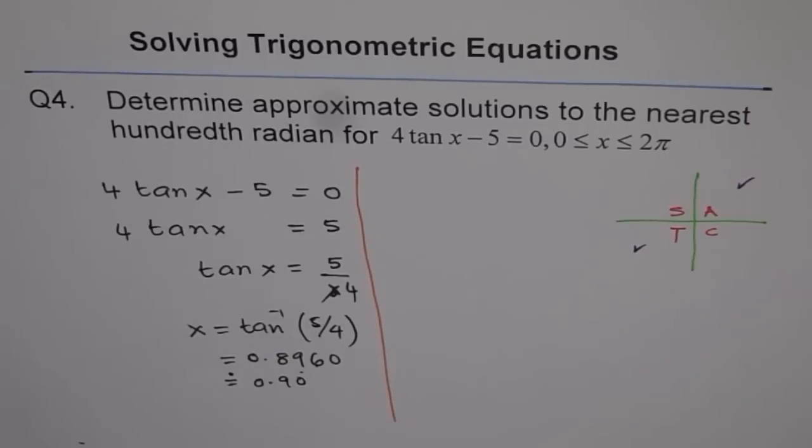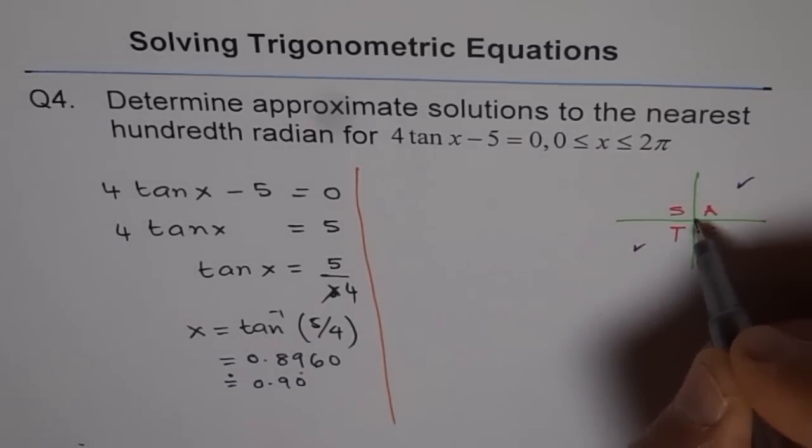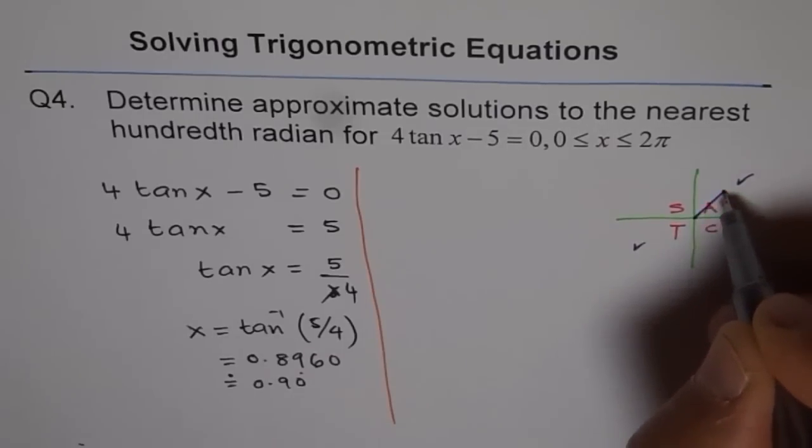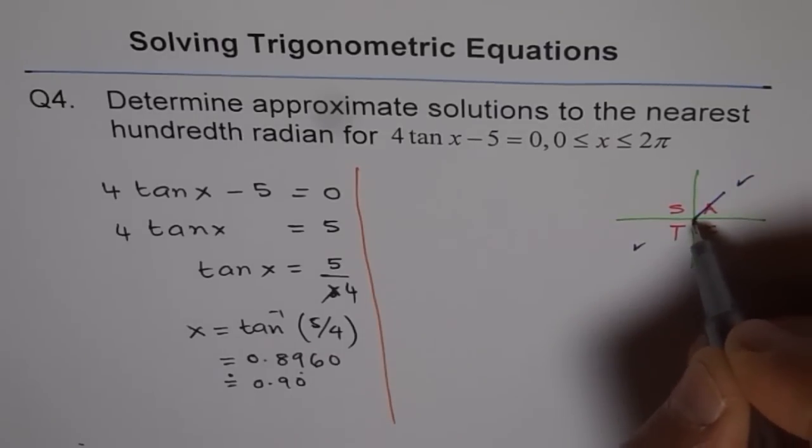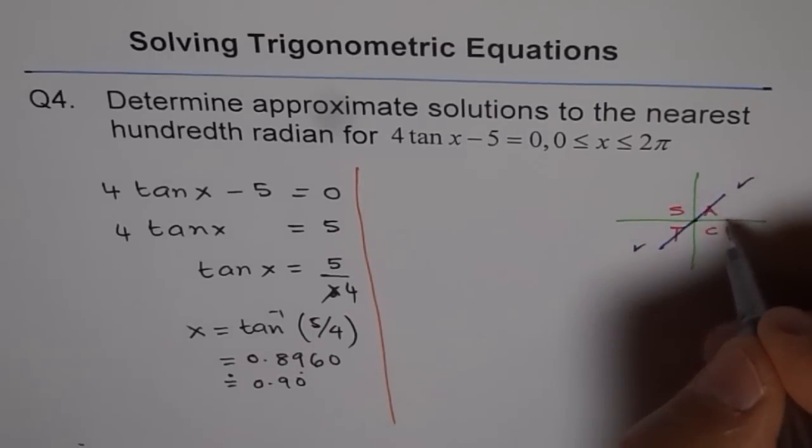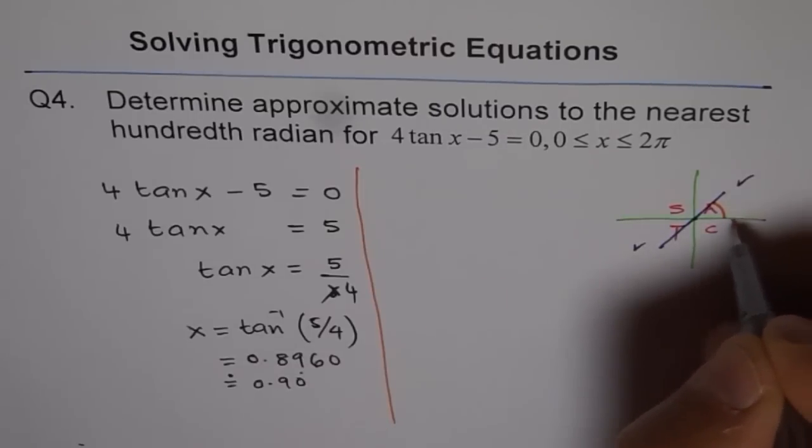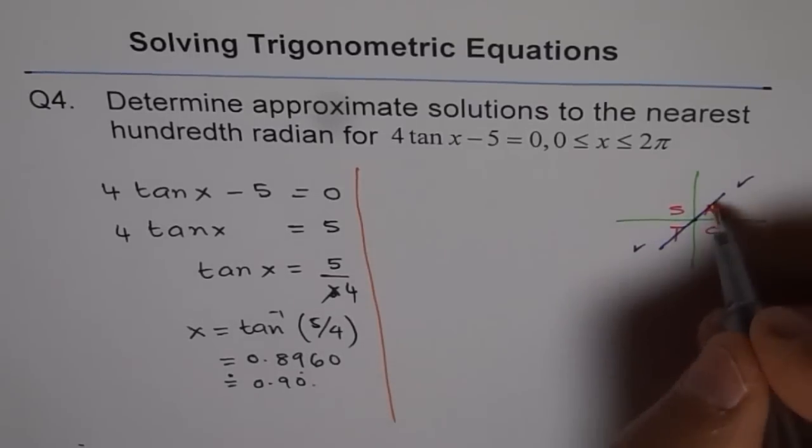But we got only one answer. How do we get the next answer? That's a big question. Many times I have seen students only writing one answer and they get half the marks. The other answer is in quadrant 3. Let's say the tan is here in quadrant 1, and you need to find this angle also. We're measuring the principal angle from the positive x-axis. That's the angle which you have already got in radians, and the other one is this.